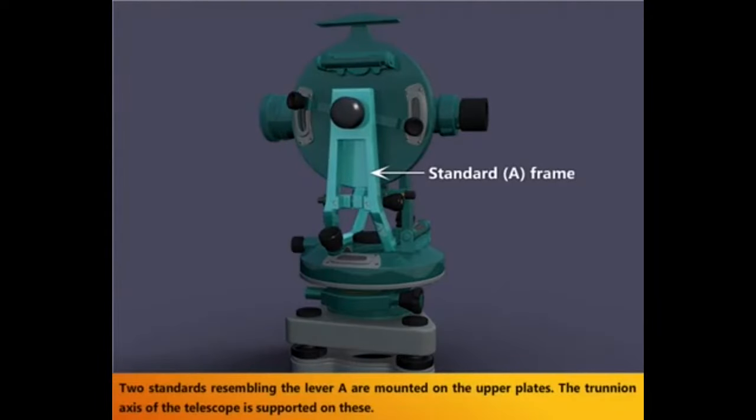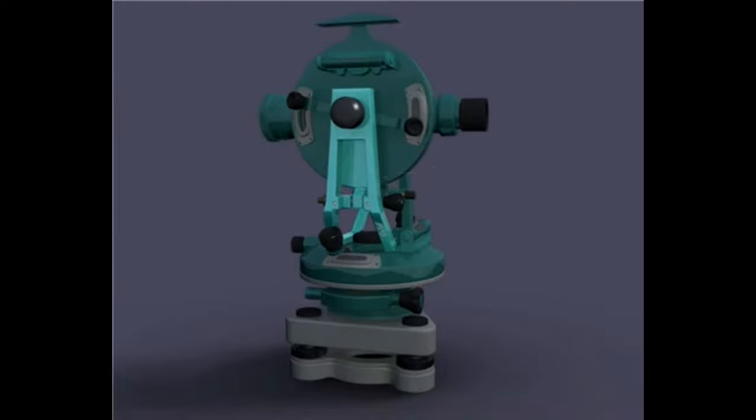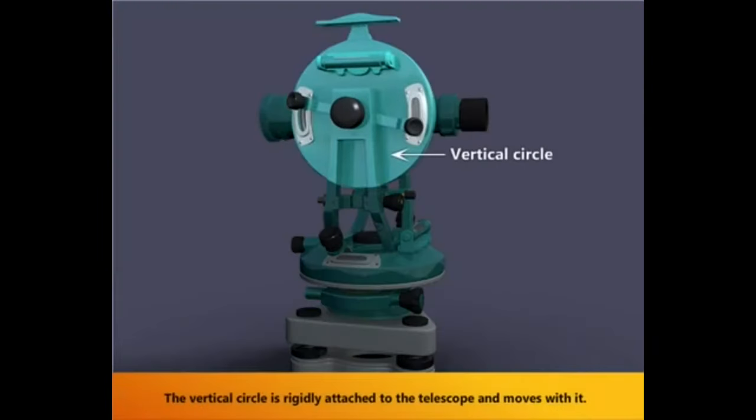Two standards resembling the lever A are mounted on the upper plates. The trunion axis of the telescope is supported on this. The vertical circle is rigidly attached to the telescope and moves with it.